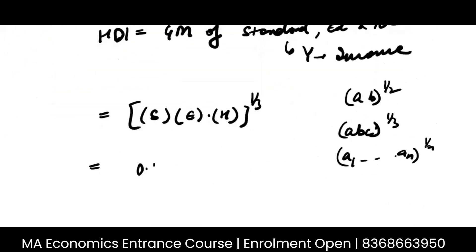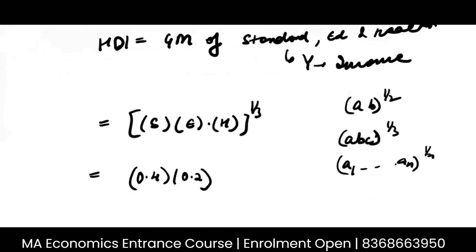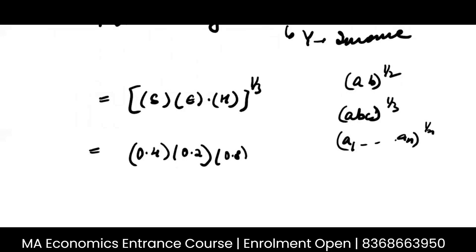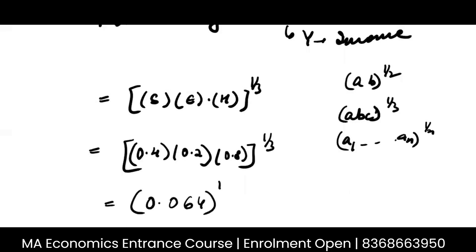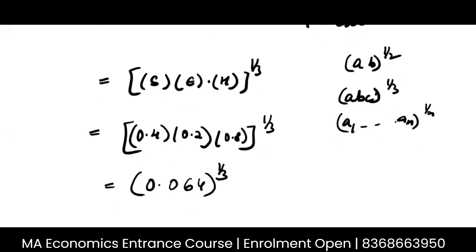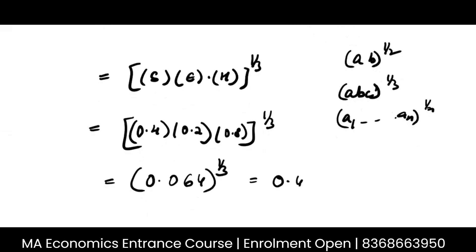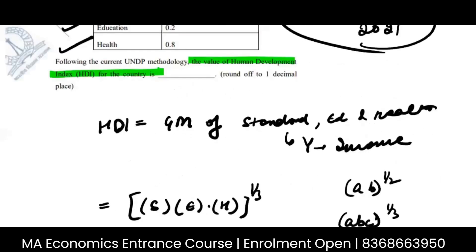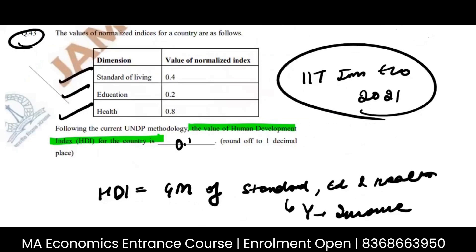Standard of living is 0.4, education is 0.2, and health is 0.8, whole to the power 1 by 3. This gives us 0.064 to the power 1 by 3, which equals 0.4. So the answer for HDI is 0.4.